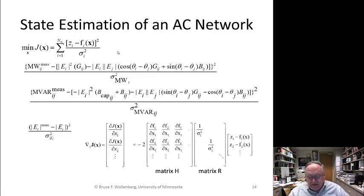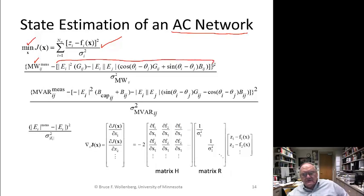Now, if I go to an AC network, well, then the minimum of J is the same function that we used before, except that where we have a megawatt measurement, we have this great big non-linear function. And I have that squared divided by the megawatt measurement sigma. And then I have the megavar minus another long equation. And I have that squared divided by sigma. And here it is for the voltage. It's just voltage magnitude minus magnitude over the sigma.